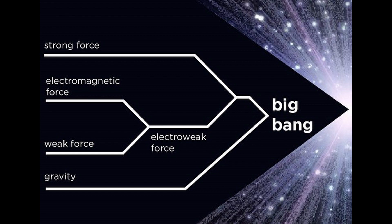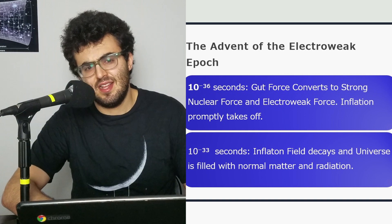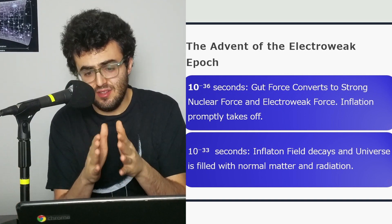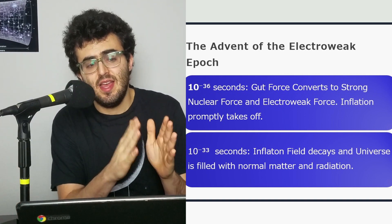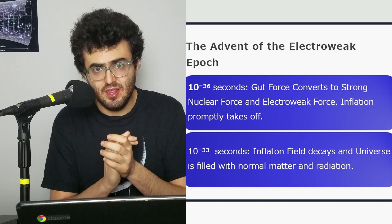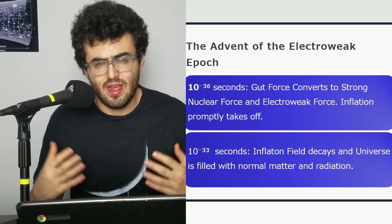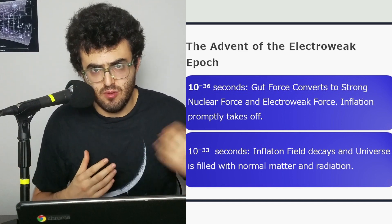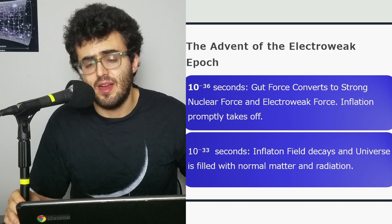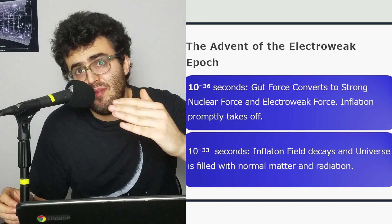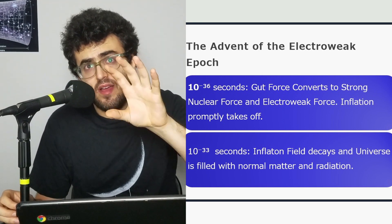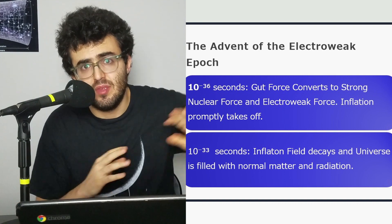Let's dig right into the Electroweak Epoch. It starts at 10 to the minus 36. Prior to that, during the GUT Epoch, the strong force and the Electroweak Force were combined — that was called the GUT Force, the Grand Unified Theory Force, which is how the GUT Epoch gets its name. So right from the get-go of the Electroweak Epoch, you have the Electroweak Force alone.